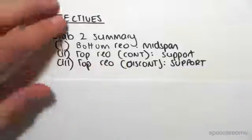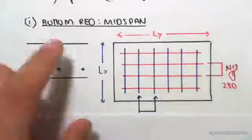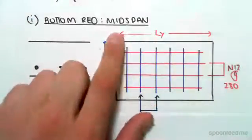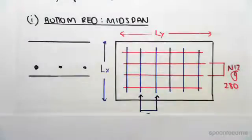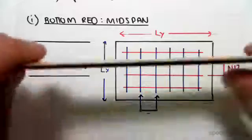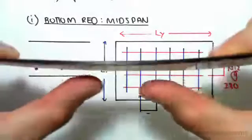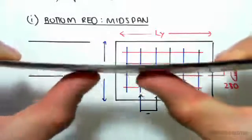So first of all, the bottom reinforcing. We're at mid-span of our slab, slab number two. The reason it's bottom reinforcing is because at mid-span our beam will sag, which means that the bottom of the slab is in tension. The steel reinforcement must be at the bottom to resist that tension.